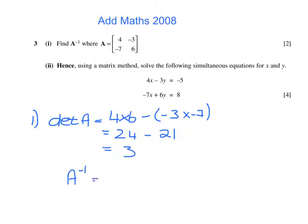So the inverse matrix A will be 1 third. And on the lead diagonal we swap places and on the other diagonal we change the sign. So 1 third, 6, 3, 7, 4.